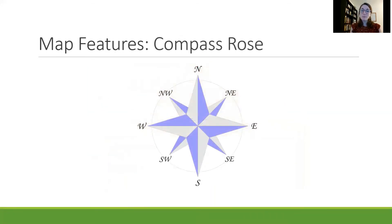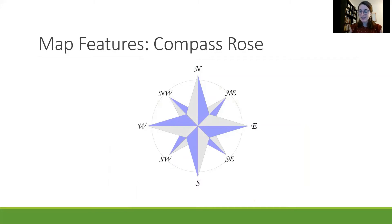The map feature of a compass rose is really important. When we see a compass rose it shows us which way is north, west, east, and south, and every direction in between. Pay attention to which way the compass rose is pointing so that you know which way is which on the map.